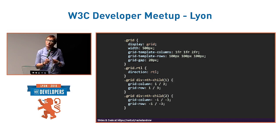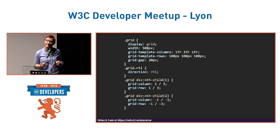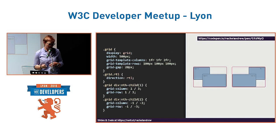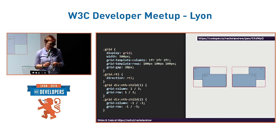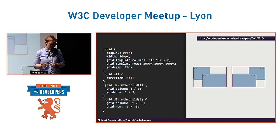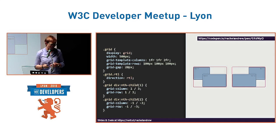With Grid, of course, we can cause items to span more than one track, and line-based placement in Grid also respects writing mode. Here I've got two layouts both using Grid — one is left-to-right and the other is right-to-left. The line-based placement is exactly the same: line one column-wise starts on the left and moves to the right for left-to-right, and if you're in a right-to-left direction then we start on the right and move over to the left.